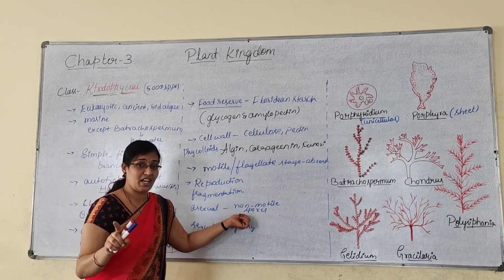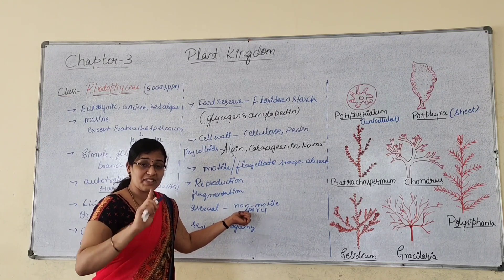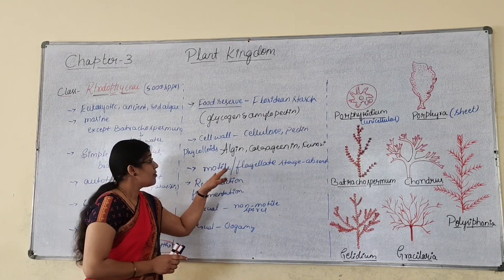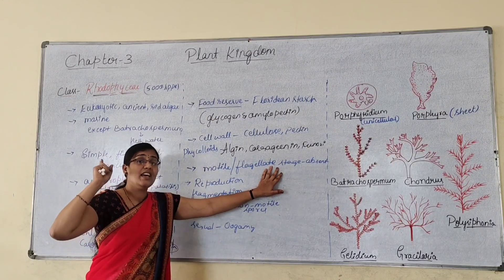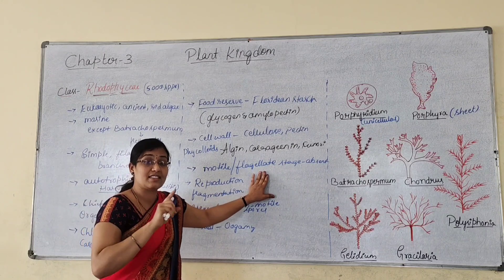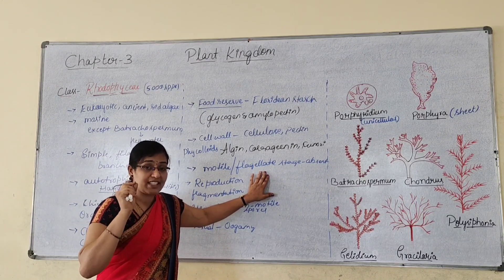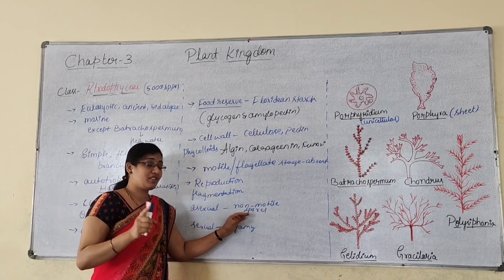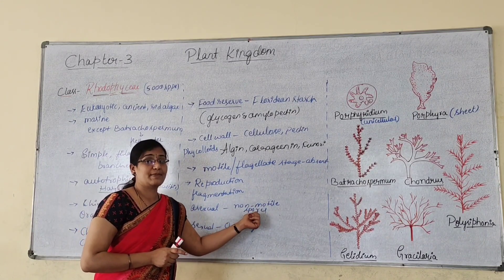Zoospores are not formed here — flagellate spores are absent. Hence motile or flagellate stages are absent in red algae. Asexual reproduction takes place by the formation of non-motile spores — the spores will not have any flagella.